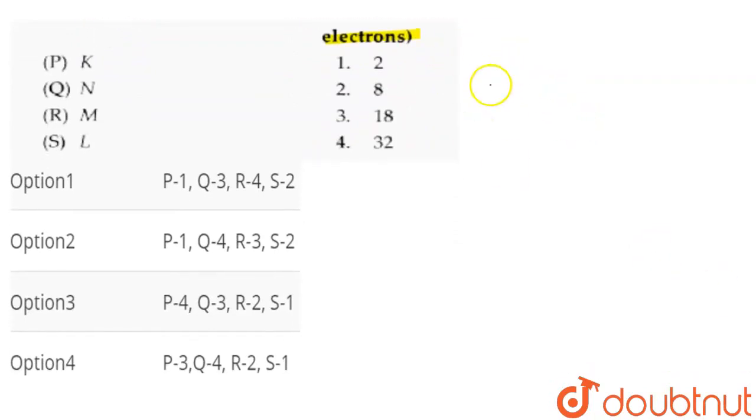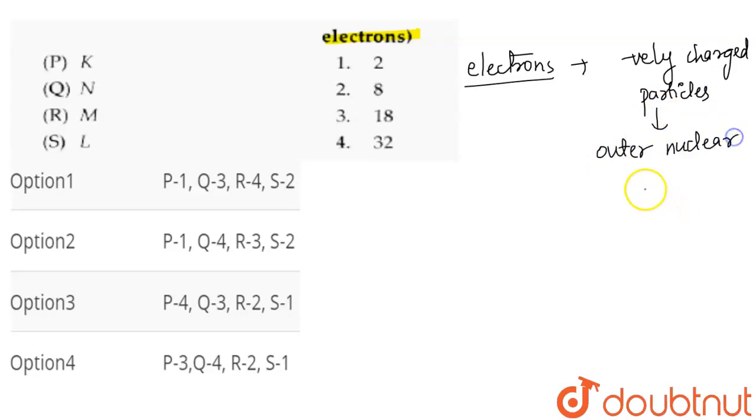If I talk about electrons, electrons are negatively charged particles which are present in the outer nuclear part. What is the outer nuclear part? These are all atomic particles which are related to the size of one atom.